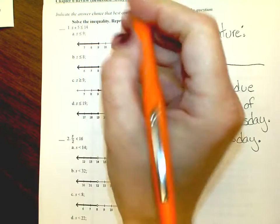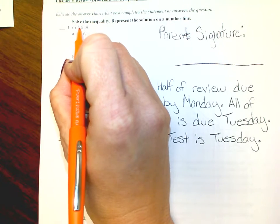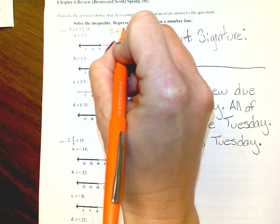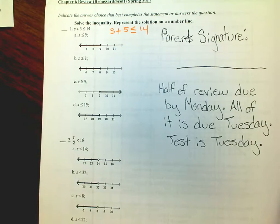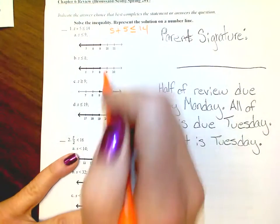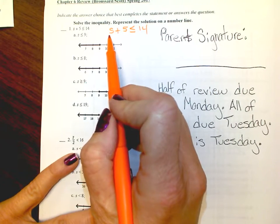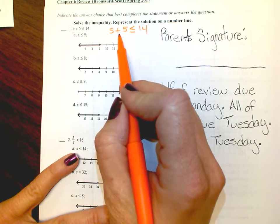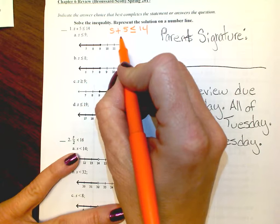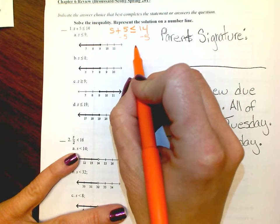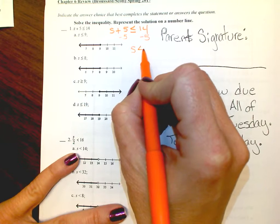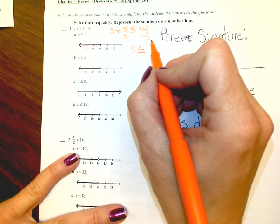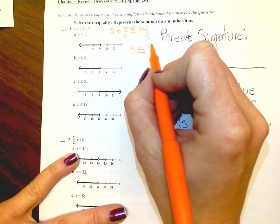Number 1: s plus 5 is less than or equal to 14. I want to get s all by itself. To do that, I need to subtract 5 to cancel it out, but I have to do it to both sides. Subtract 5 from both sides, and then s is less than or equal to 14 minus 5, which is 9.